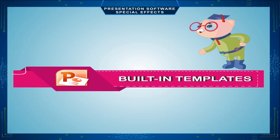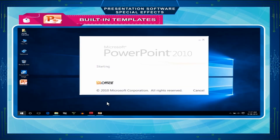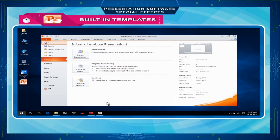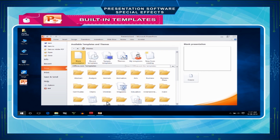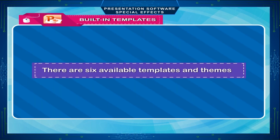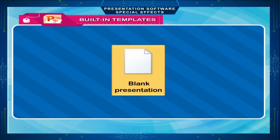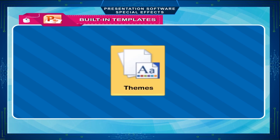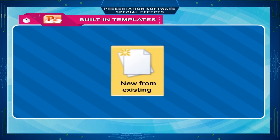The MS PowerPoint window will open with Available Templates and Themes under the New option on the File tab. There are six available templates and themes: Blank Presentation, Recent Templates, Sample Templates, Themes, My Templates, and New from Existing.